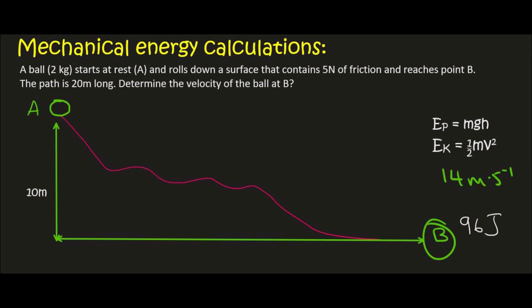So now that we have the energy at B, we've got everything we need because we know that the mechanical energy at B is equal to 96. And that's equal to its kinetic energy plus its potential energy. Because it's on the ground, its potential energy is 0. And so we can say that 96 is equal to its kinetic energy. And kinetic energy is 1/2 mv².